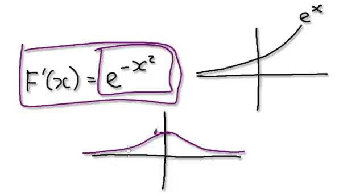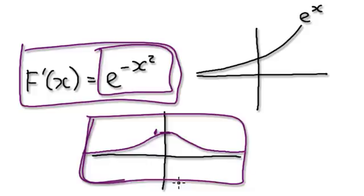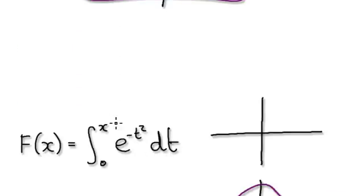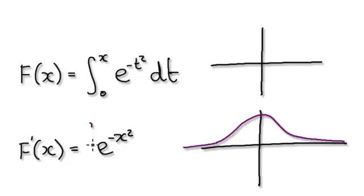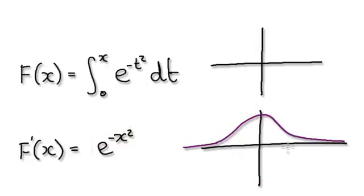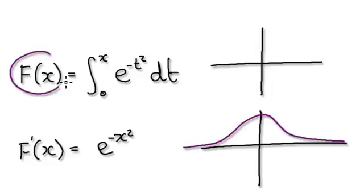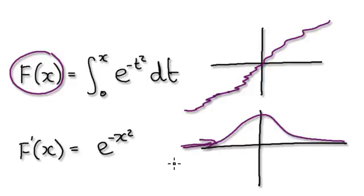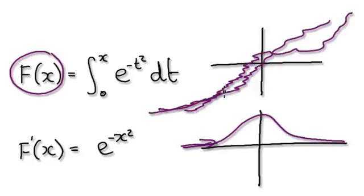Now that we know this derivative looks like a bell curve, we can look at this graph and deduce something about our original graph. If you look at the purple line here, this is always above 0 — always above the horizontal. Well, if f prime is always above 0, it must mean that our original function must always be climbing, because the gradient is always positive.